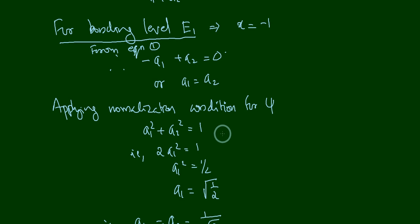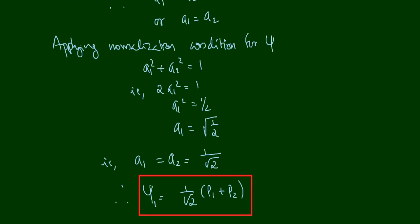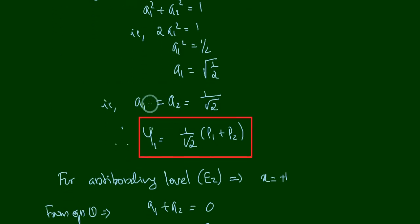To get the absolute values, we apply the normalization condition: a1² + a2² = 1. Since a1 = a2, this becomes 2a1² = 1, so a1² = 1/2, and therefore a1 = 1/√2. Thus a1 = a2 = 1/√2.